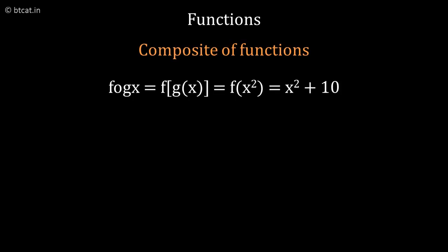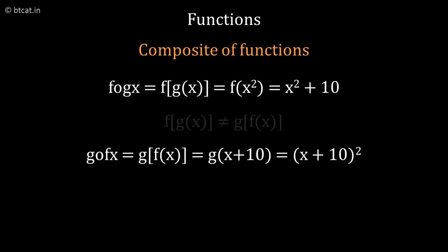So if I want to find what is g∘f(x), which is different from f∘g(x), I want to find g[f(x)]. So g(x + 10), which will become (x + 10)². So as you can see, x² + 10 which we got earlier and (x + 10)² which we got now, they are different numbers.